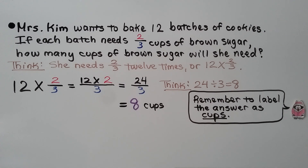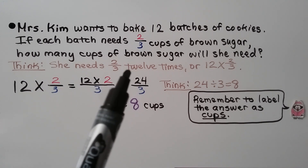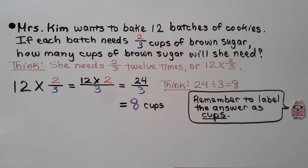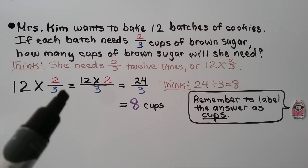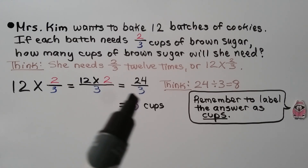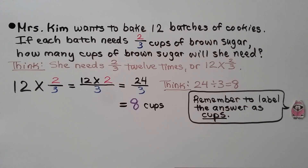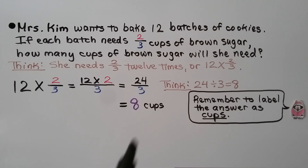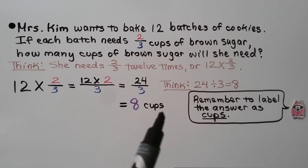Mrs. Kim wants to bake 12 batches of cookies. If each batch needs 2 thirds cups of brown sugar, how many cups of brown sugar will she need? We think: she needs 2 thirds 12 times, or 12 times 2 thirds. We multiply the whole number 12 times the numerator — that's 24. We slide the denominator across, we have 24 thirds. 24 divided by 3 is equal to 8 — that's 8 cups. Remember to label the answer with units.